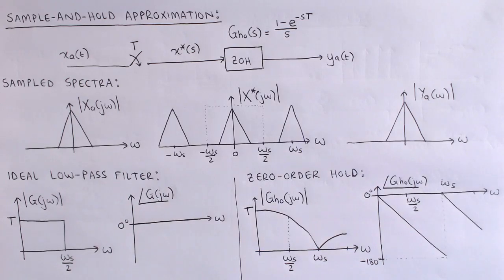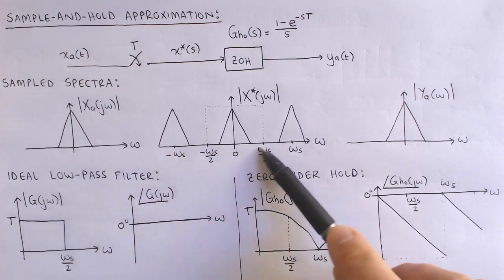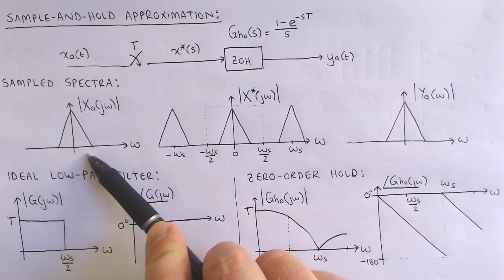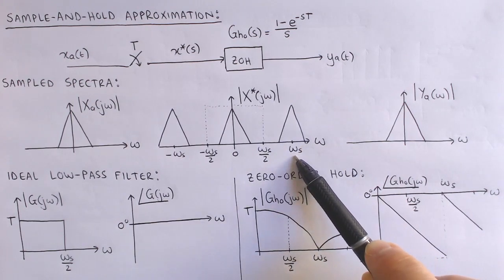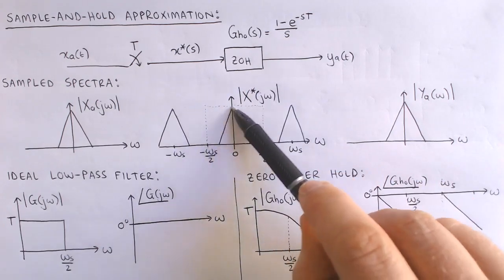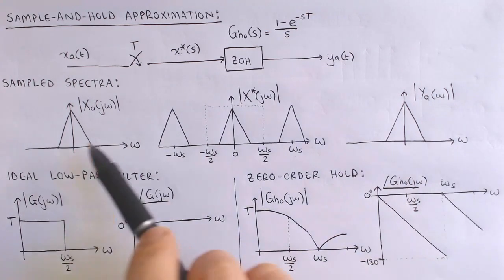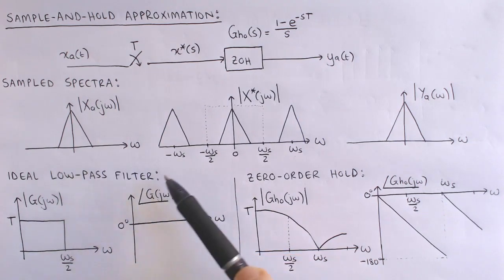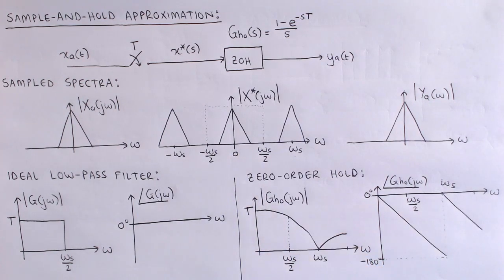To support our intuitive reasoning, let's look at the frequency response of the sample and hold circuit. Suppose the spectrum of the analog input signal is given by this plot, then the sampled spectrum is given by this plot, where the analog spectrum is repeated at integer multiples of the sampling frequency, here denoted by omega_s. If the zero-order hold circuit can be viewed as an ideal low-pass filter, then the output of the zero-order hold circuit is a perfect reconstruction of the input signal, provided that the frequency content of the input signal does not exceed the Nyquist frequency. That is, aliasing does not occur.